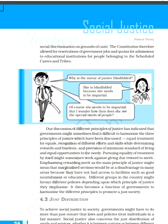Marginalized sections cannot compete with persons who are healthy and from educated, rich families. That is why special treatment and special needs are recognized, and they are given quotas in admissions and reservations in government jobs. These were the three principles of justice, and the main aim of justice is to do the welfare of the nation and give each person his due — whatever is due to that person.